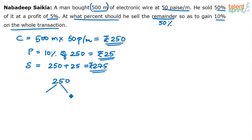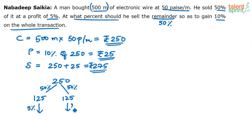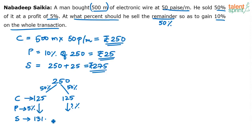The 250 rupees cost price has to be split into two parts. 50% of it is 125, and the other 50% is also 125. I'm breaking up the cost price into two equal parts — 125 and 125. The first part was sold at 5% profit. So 5% of 125 is 6.25, giving a selling price of 131.25.